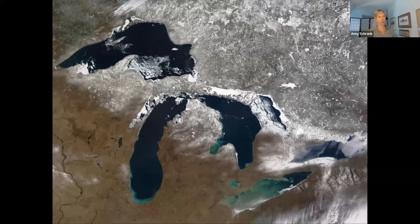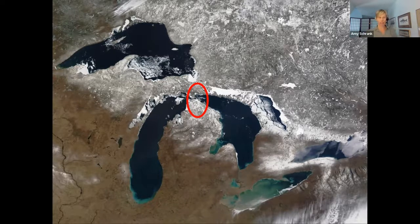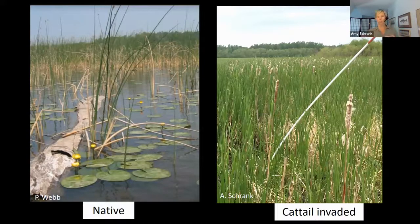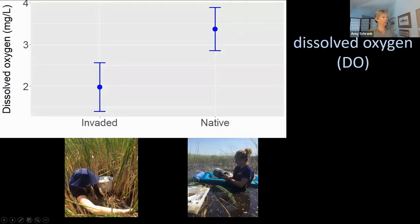I want to give you a little background research from the Great Lakes that leads up to the questions we're asking in Minnesota. In northern Lake Huron, we compared fish and water quality in native nearshore zones versus cattail-invaded nearshore zones. We measured dissolved oxygen in both types of areas. You can see on the graph that there's significantly more dissolved oxygen in native regions than in cattail-invaded regions.